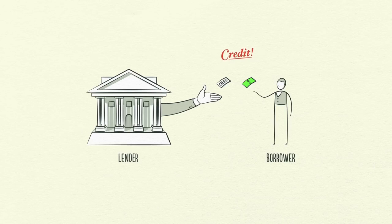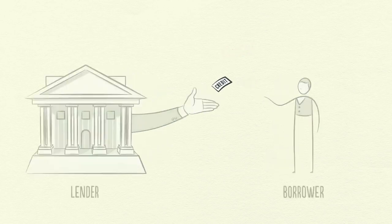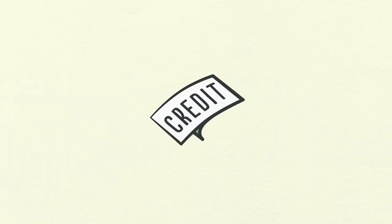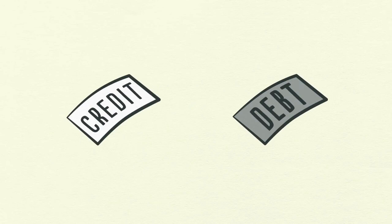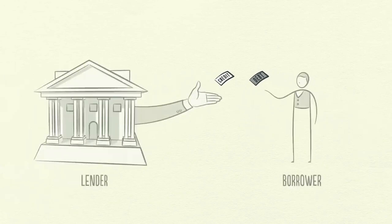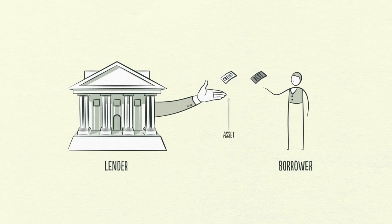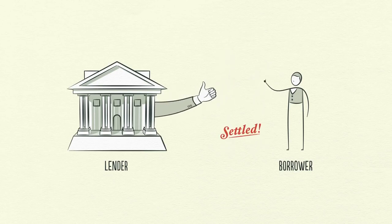Any two people can agree to create credit out of thin air. That seems simple enough, but credit is tricky because it has different names. As soon as credit is created, it immediately turns into debt. Debt is both an asset to the lender and a liability to the borrower. In the future, when the borrower repays the loan plus interest, the asset and the liability disappear and the transaction is settled.